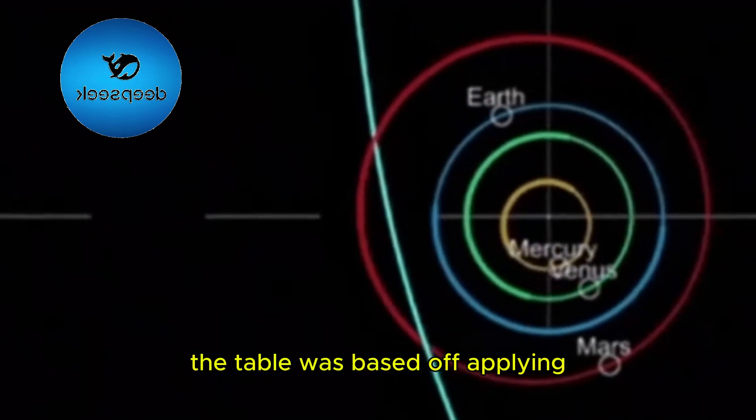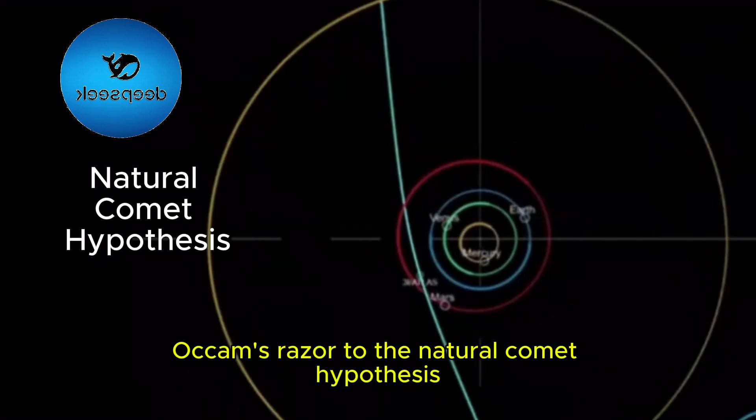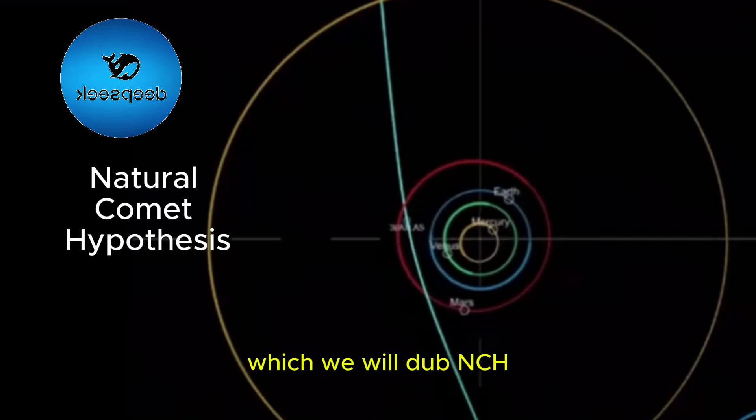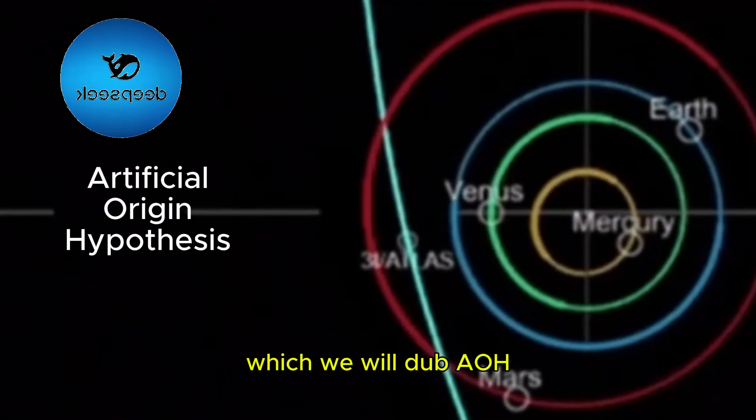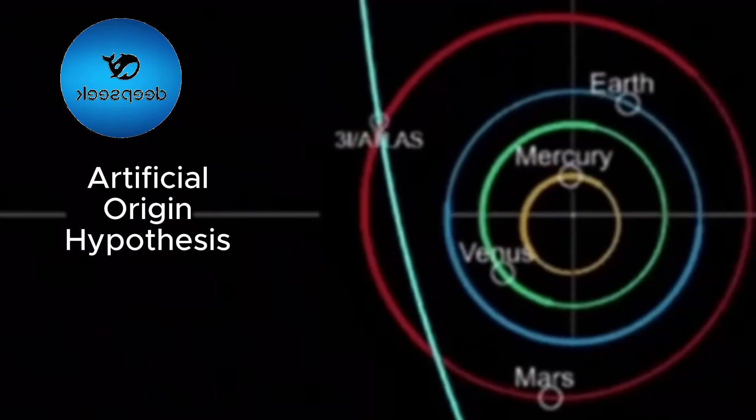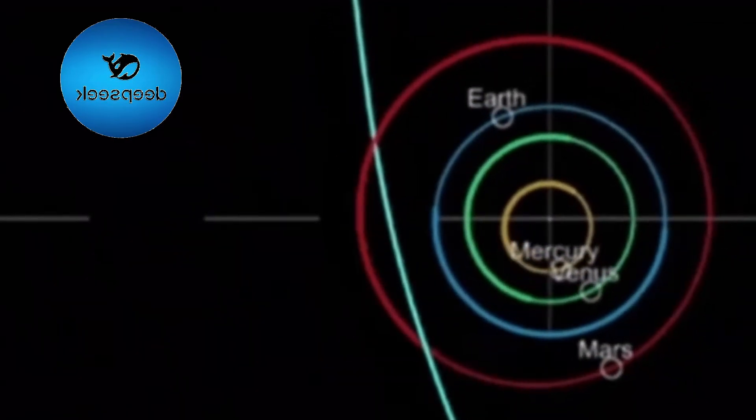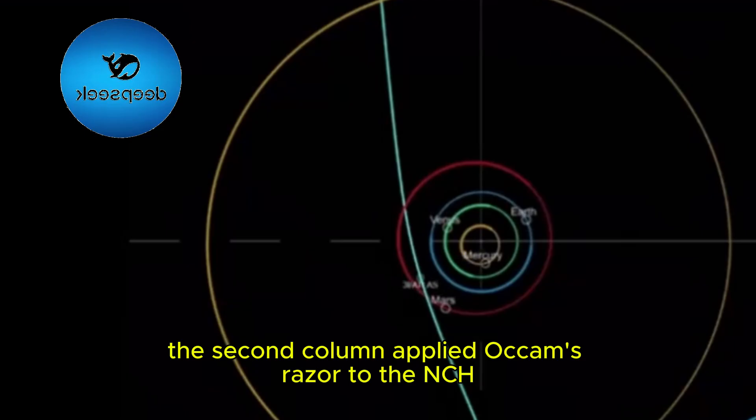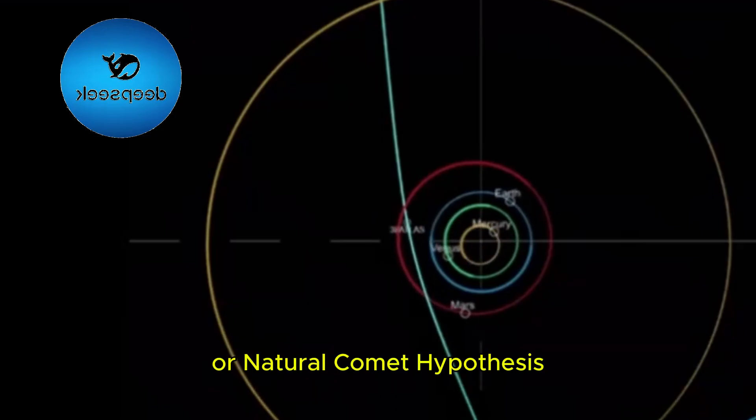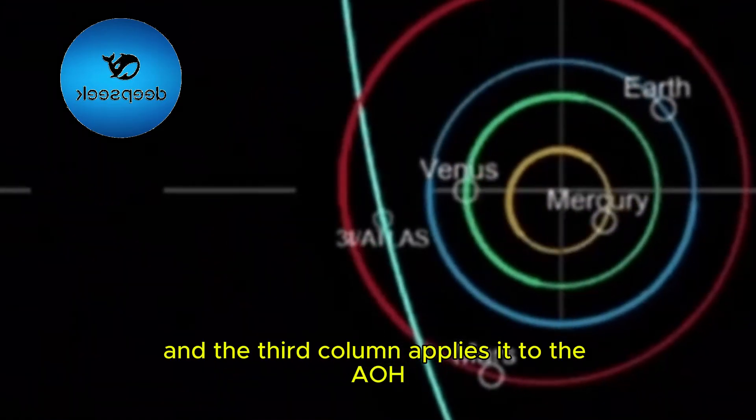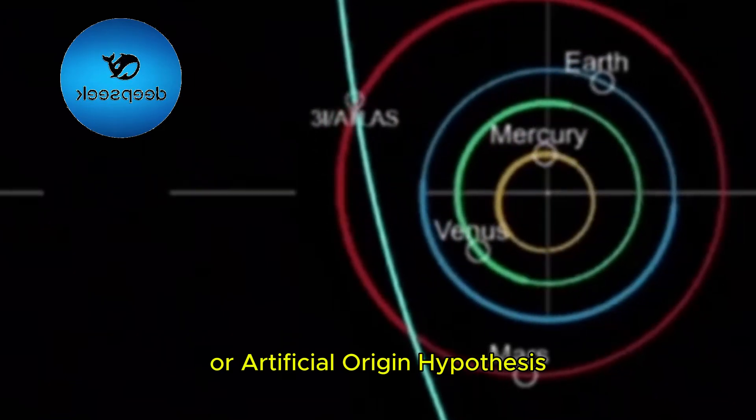The table was based off applying Occam's Razor to the natural comet hypothesis, which we will dub NCH, and the artificial origin hypothesis, which we will dub AOH. The first column in the table had the 5 observables. The second column applied Occam's Razor to the NCH or natural comet hypothesis, and the third column applies it to the AOH or artificial origin hypothesis.